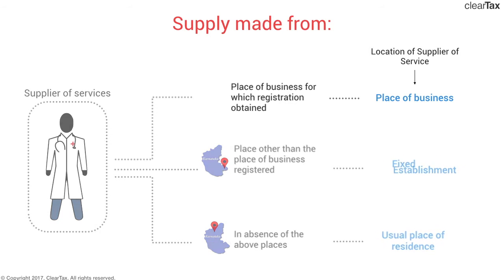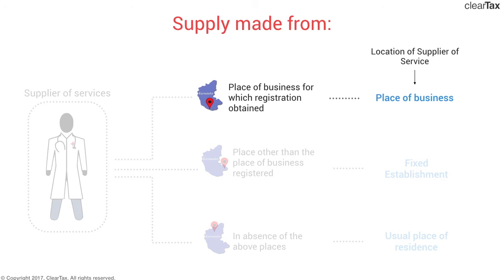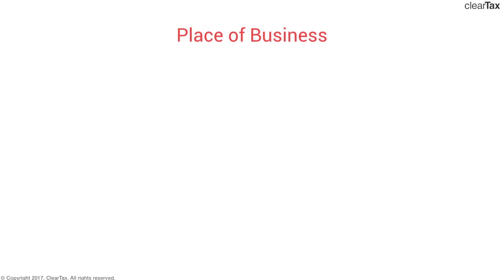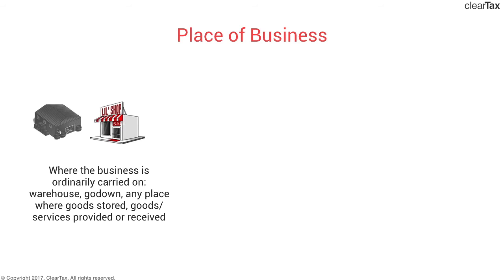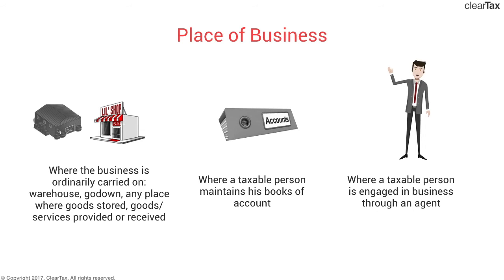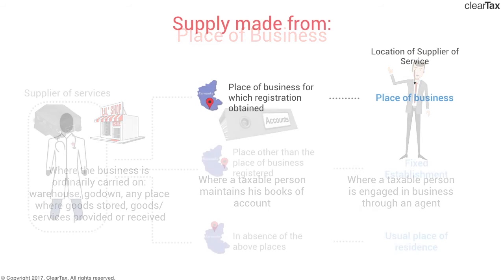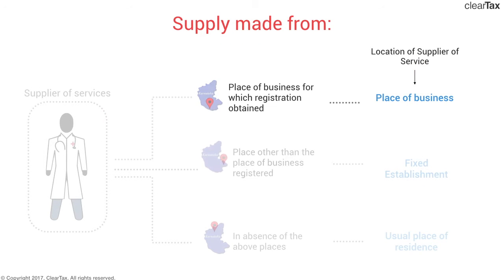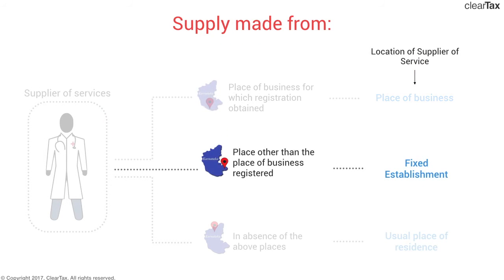We've already seen what a place of business is. It is a place where the business is ordinarily carried on, whether it's the warehouse, godown, or any place where goods are stored, received, or provided. Or it could be a place where the person is maintaining his books of accounts, or where he's dealing through an agent.